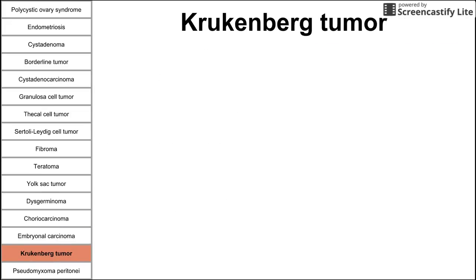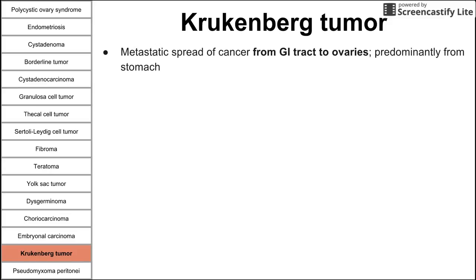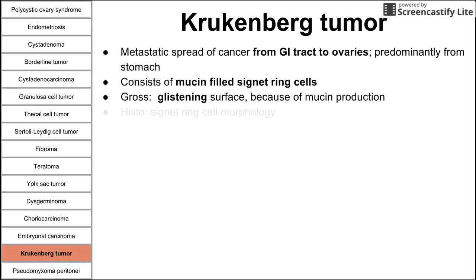Next is the Krukenberg tumor, a cancer that has spread from the GI tract — usually the stomach — to the ovaries. These consist of mucin-filled signet ring cells. Signet ring cells have the nucleus pushed toward the edge of the cell, resembling a signet ring used to stamp envelopes. On gross pathology, you see a glistening surface because these cells produce mucus.